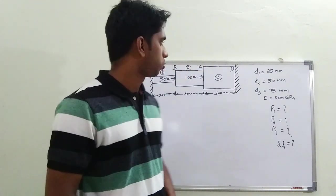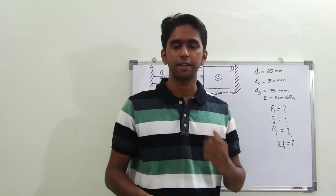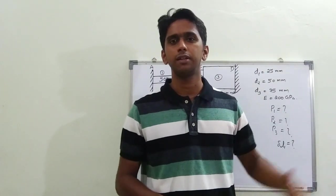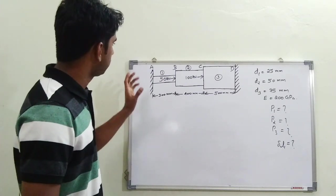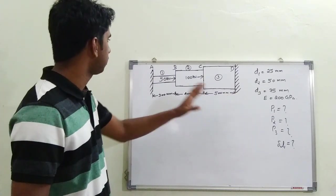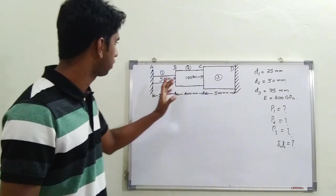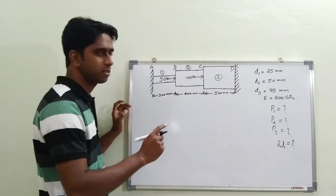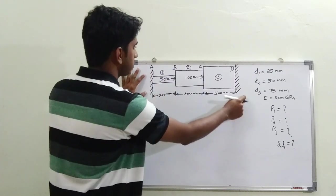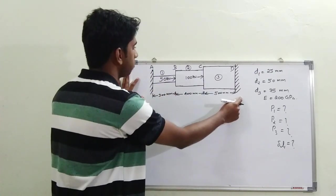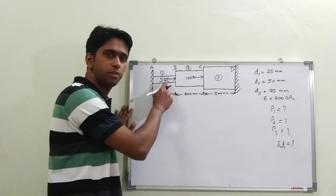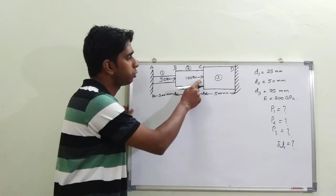Welcome to another video lecture of Make Mechanical Simple. Today we are going to discuss a problem from the subject of mechanics of solids. A bar ABCD is given which has a varying cross-section, meaning it has different diameters at different sections. The ends are fixed — both ends are fixed — and loads are acting at the intermediate sections: 50 kN at one point and 100 kN at another.